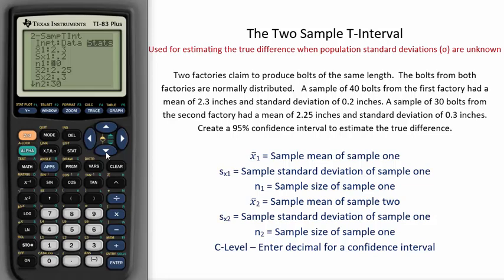A sample of 30 bolts from the second factory had a mean of 2.25 inches and a standard deviation of 0.3 inches.